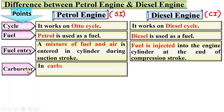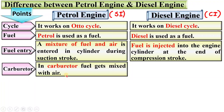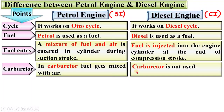Next, carburetor. In a carburetor, fuel gets mixed with the air. In diesel engine, carburetor is not used. Keep in mind that in case of petrol engine, a carburetor is used to prepare the air-fuel mixture.